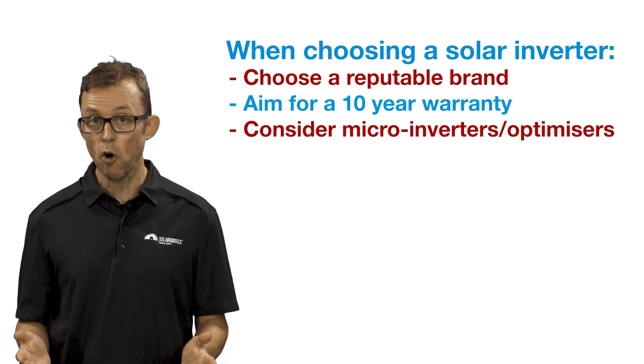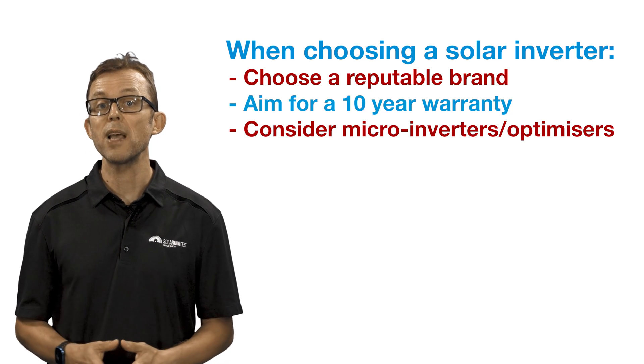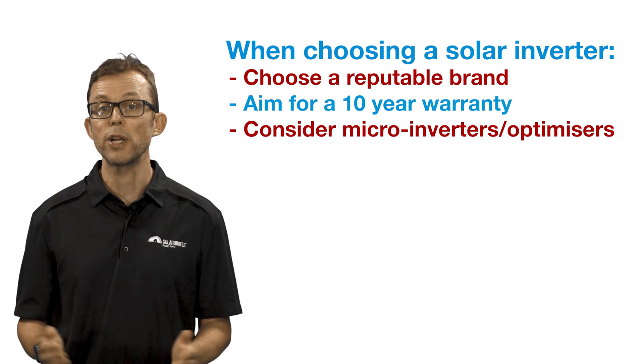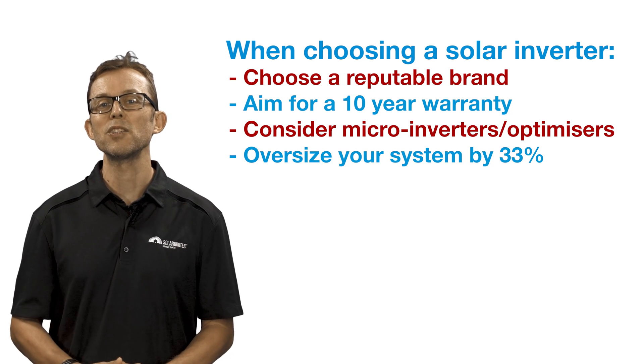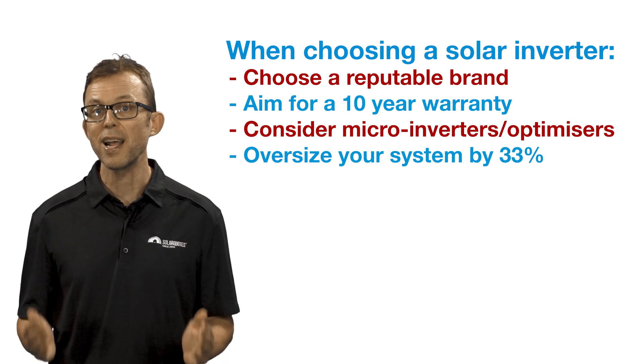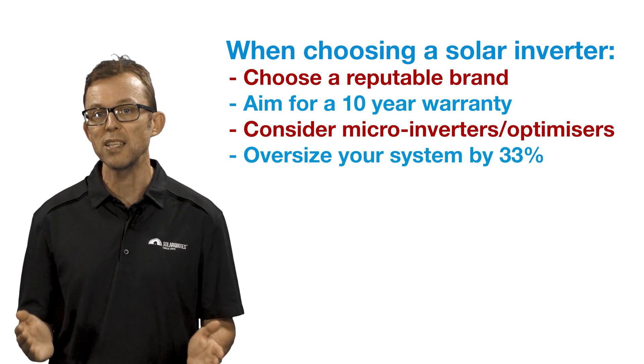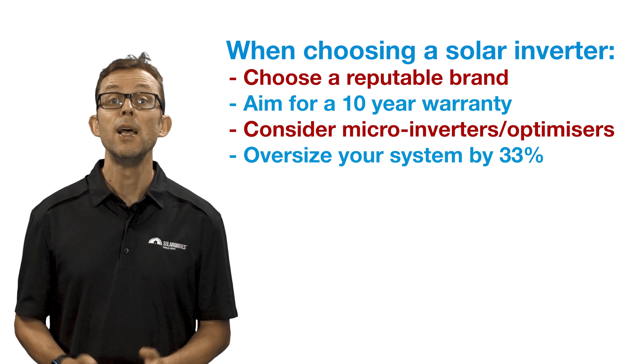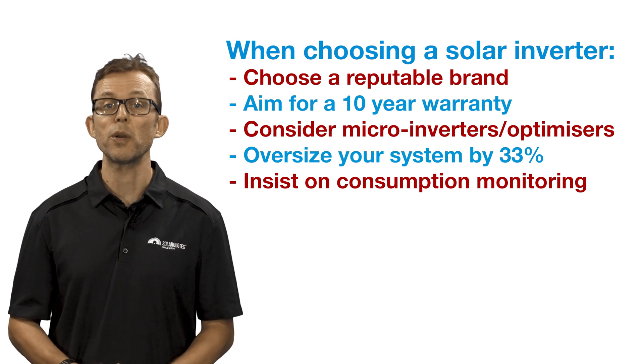Consider micro inverters or optimizers if you like the sound of the extra benefits they provide over string inverters. Don't be afraid of oversizing your system by 33%. It'll deliver great bang for buck and provide extra generation in those cold, less sunny winter months. Insist on consumption monitoring with your system.